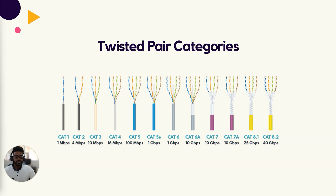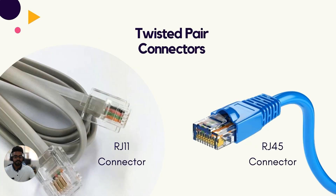The most common categories are Cat5e, which stands for enhanced, and Cat6. Cat5e supports speeds of up to one gigabit per second — the wires are twisted much tighter than lower category cables, which reduces crosstalk. Cat6 cables support 10 gigabits per second transfer speeds and are typically used in high-speed network and broadband infrastructures. To connect twisted pair cables to devices, an RJ45 connector is used. RJ45 connectors have eight pins that connect to the four wire pairs in a cable.